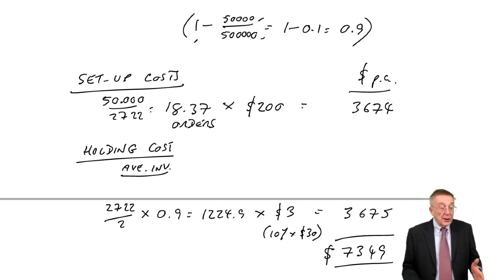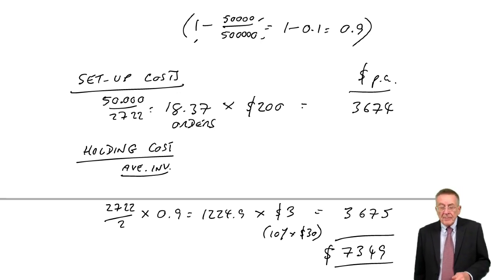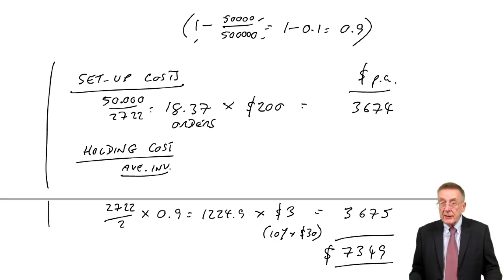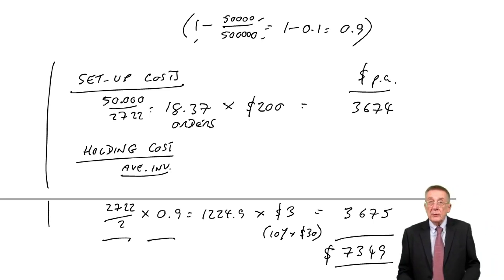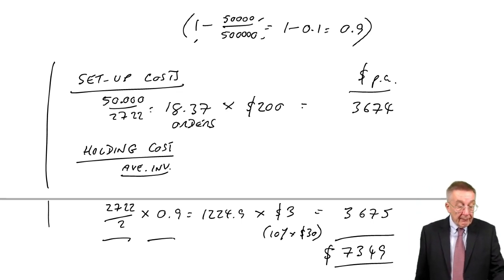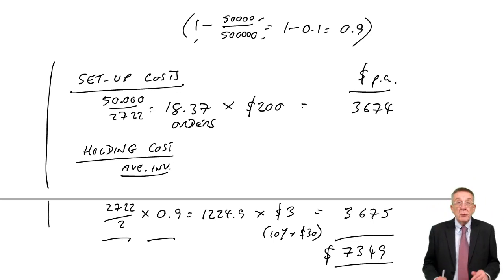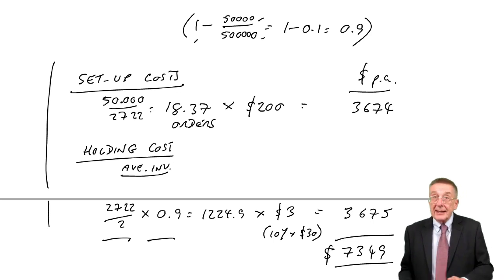Two things to remember: make sure you can use the economic batch quantity formula — even though it's on the formula sheet, it's very rarely asked, but be safe. And to be safe, remember the average inventory is the batch quantity over 2 times (1 minus D over R), which here gives 0.9. We'll leave this lecture here — one more lecture on this chapter, looking at something rather different, which I'll explain in the next lecture.